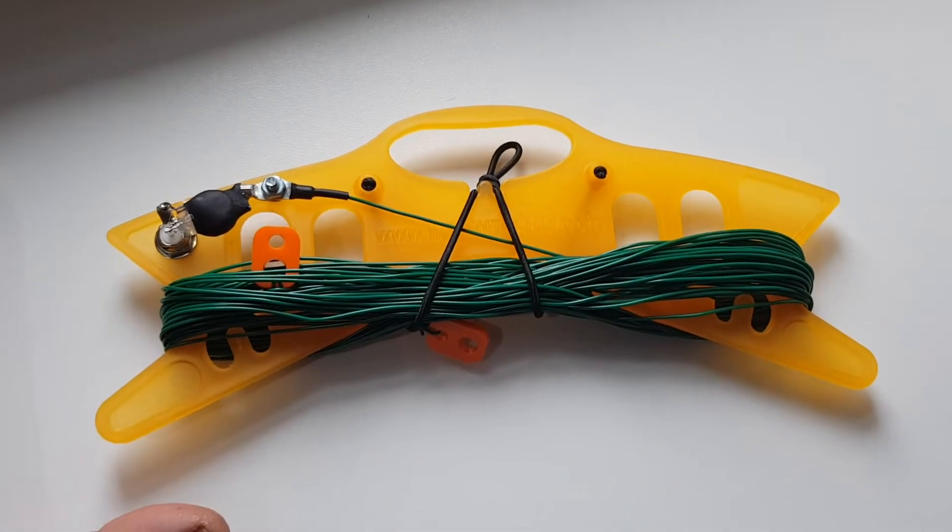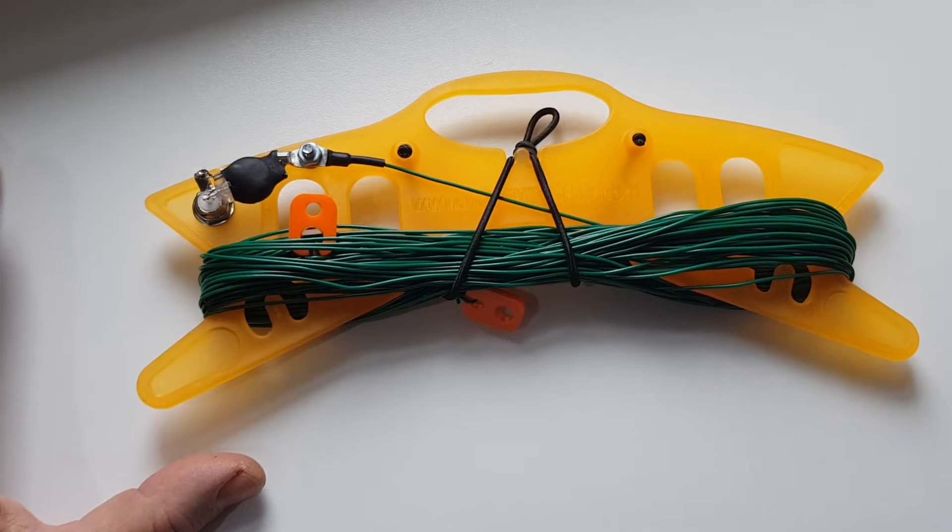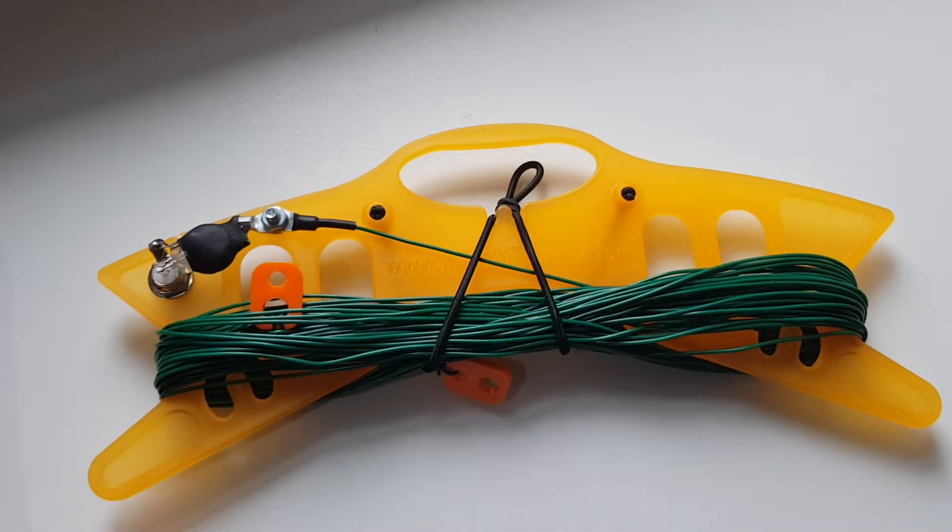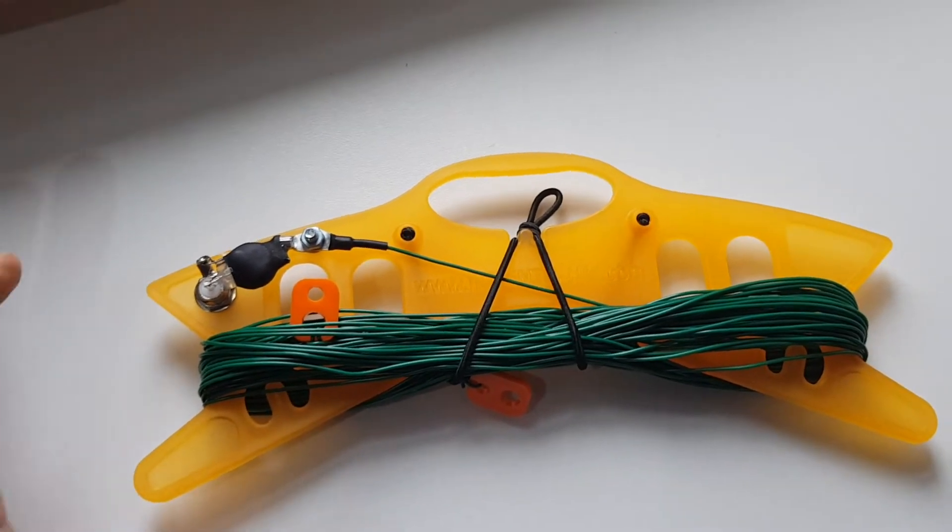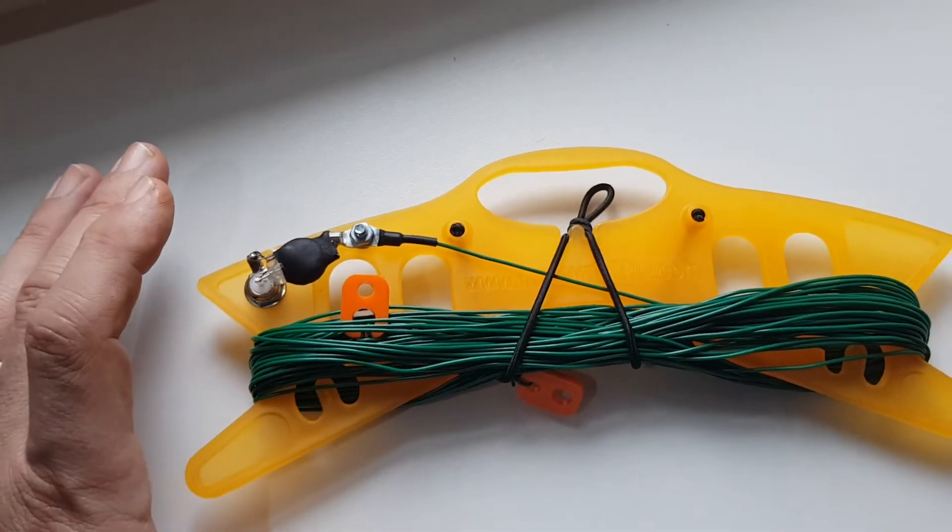M0FXP, here we are with the 60-foot wire antenna made by MW0SAW. We're going to be testing it in a second. We've got a BNC connector here, there's a 49 to 1 transformer that's been made here.